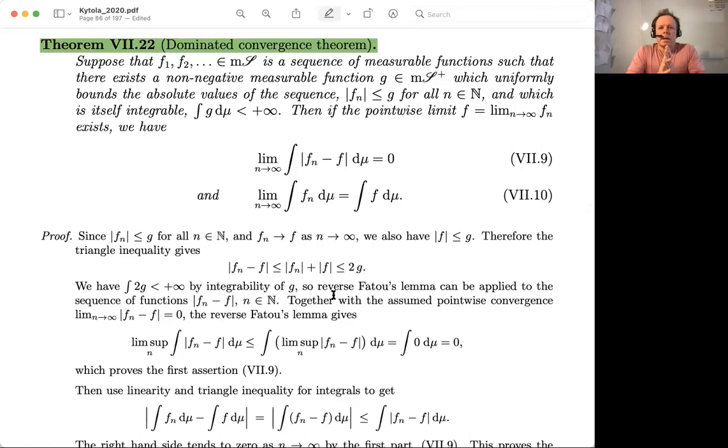It says we have a sequence of functions which are measurable functions. And the key thing is that we are searching for an upper bound G. We assume that we have one function which is upper bounding in this sense, that it's bounding all the other functions from above. And we assume that the upper bound is integrable, so that this upper bound integrates into a finite number.